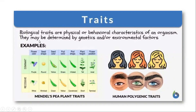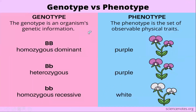They may be determined by genetics and or environmental factors. Two key biology-level traits are genotype and phenotype. Genotype is an organism's genetic information.